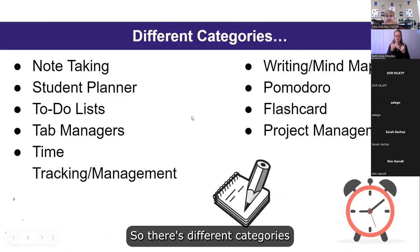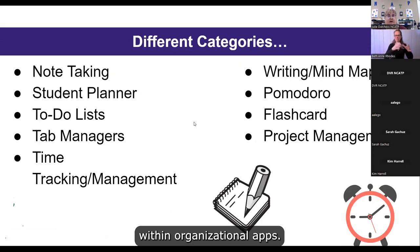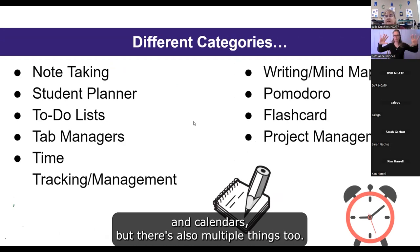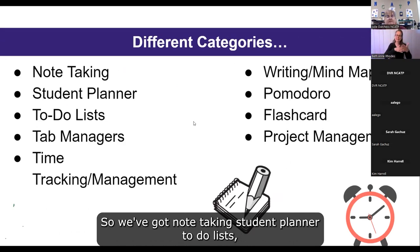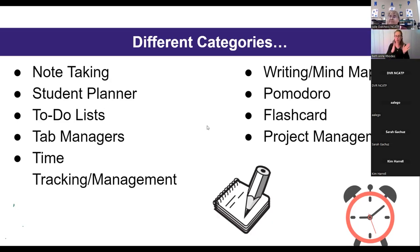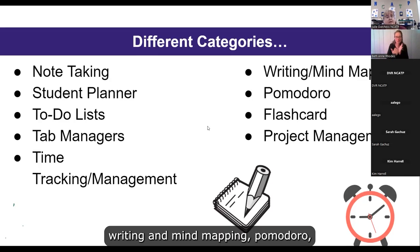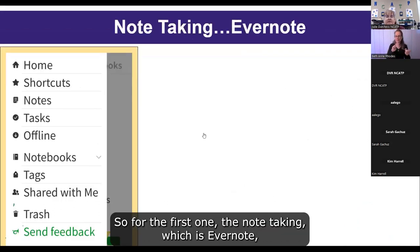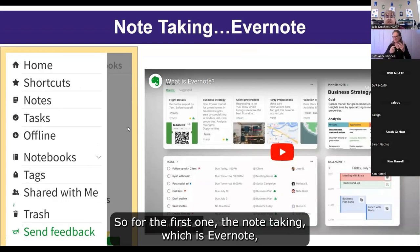Let's dive into what we're going to be looking at. There are different categories within organizational apps — a lot of times we just think of schedulers and calendars, but there are multiple things: note taking, student planner, to-do list, tab managers, time tracking and management, writing and mind mapping, Pomodoro, flashcard, and project management.